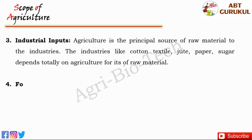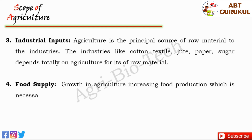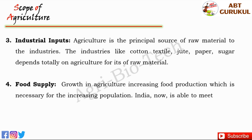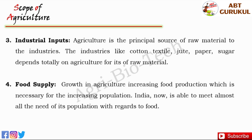Food production is the main scope of agriculture. The growth in agriculture also increases food production, which is necessary for the growing population. India is now able to meet almost all the needs of its population with regards to food by developing intensive programs for increasing food production.